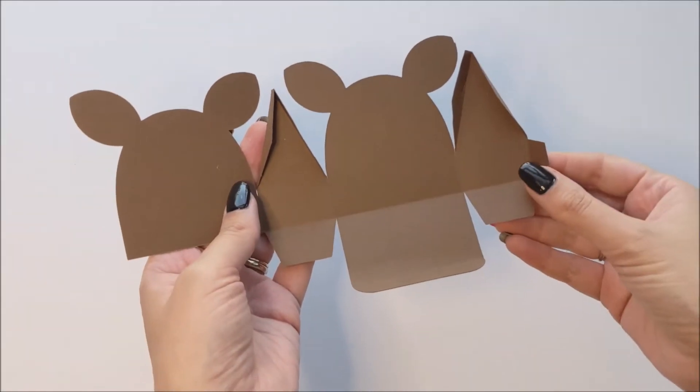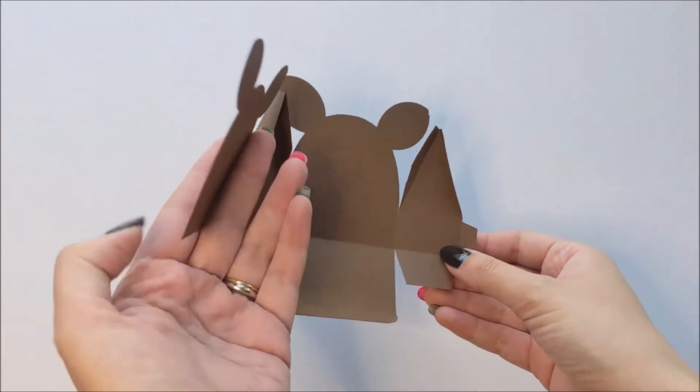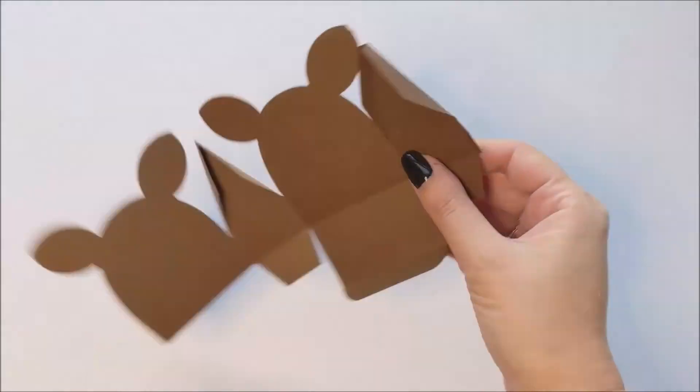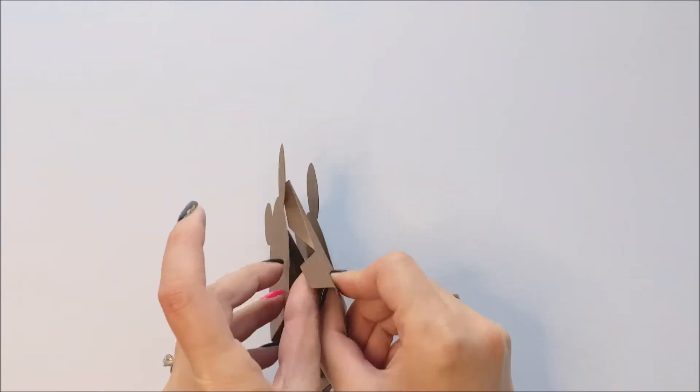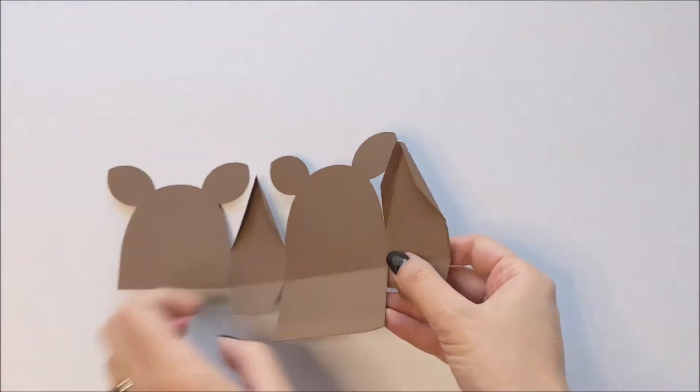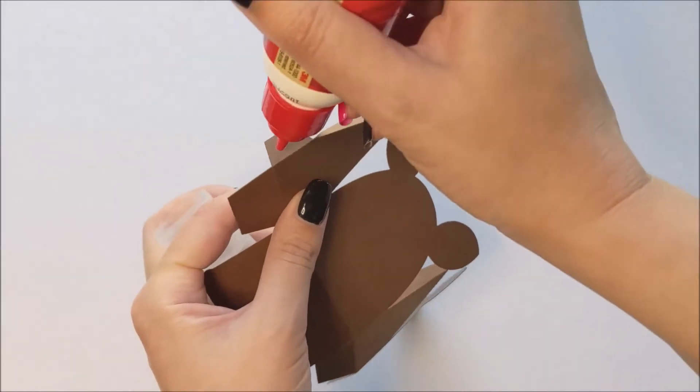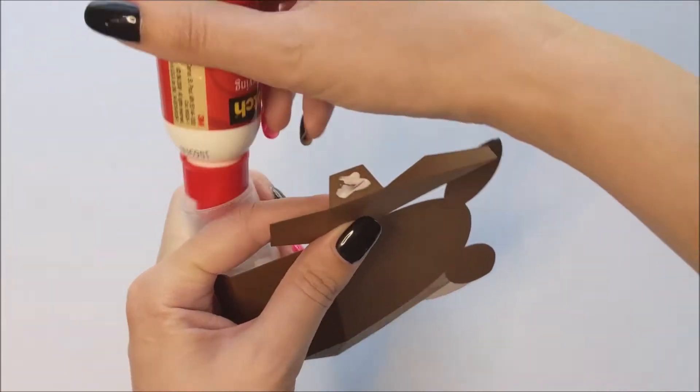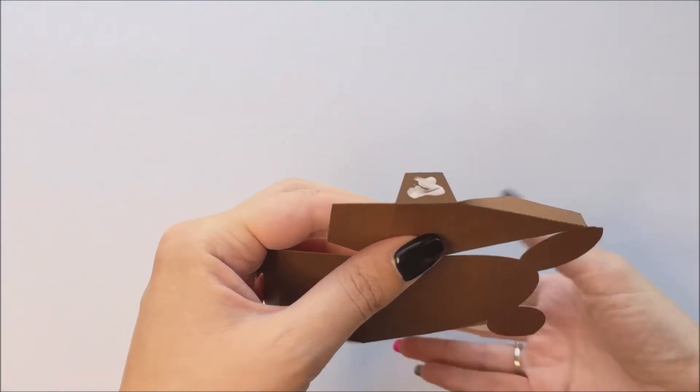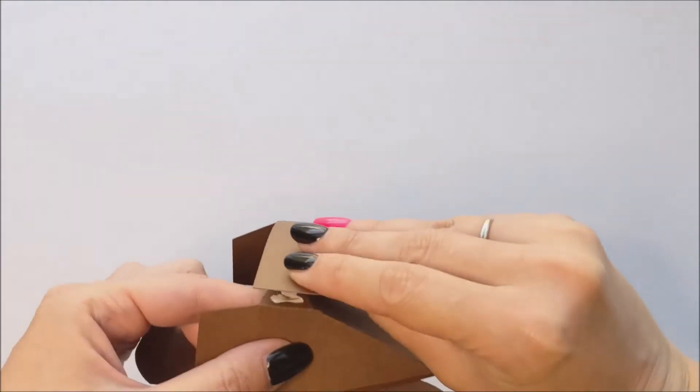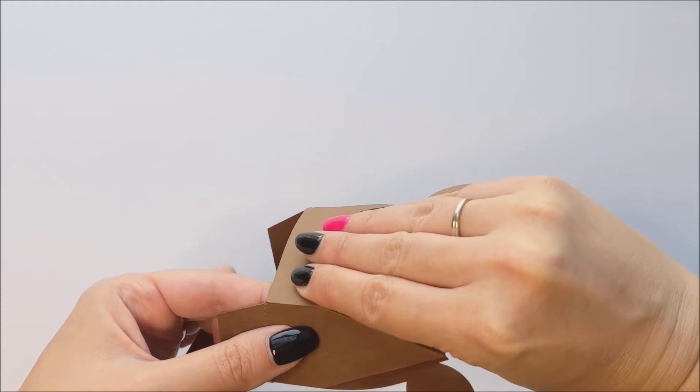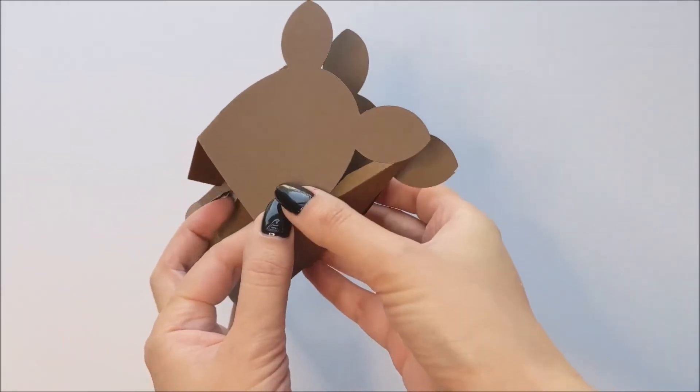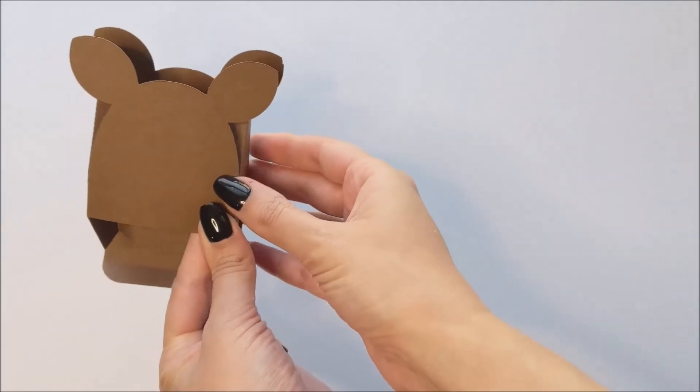After your box is pre-folded, you're going to apply glue to this little tiny side tab here. We'll be folding that around to meet the other side. So we're just going to glue that together to meet the other side and that's going to form our main box shape.